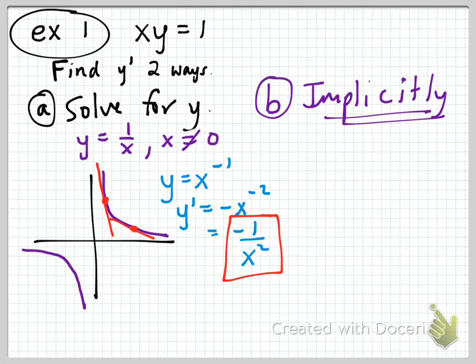Let's choose a point along the curve — say (1, 1). At that point, the slope of the tangent line equals negative 1 over 1 squared, which is negative 1. So we know the slope right there is negative 1, and as x changes, so does the slope.